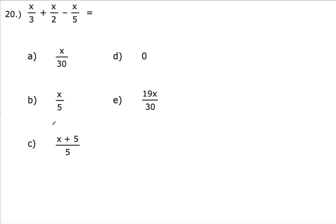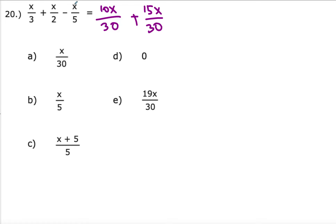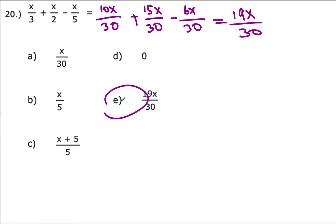Number 20: combining three fractions with different denominators requires a common denominator of 30. Multiplying the first fraction top and bottom by 10 gives 10x over 30. Multiplying the second by 15 gives 15x over 30. Multiplying the third by 6 gives minus 6x over 30. Combining gives 10x plus 15x minus 6x, which is 19x over 30. So choice E is the answer.